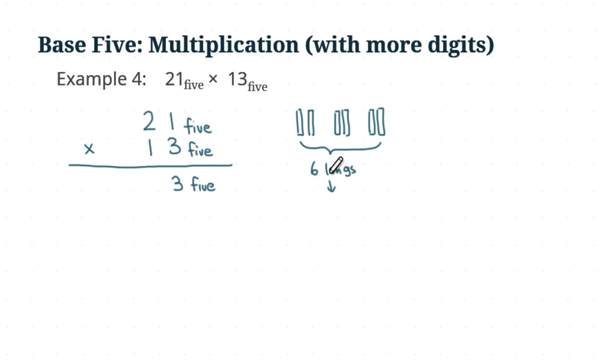So we take five of those longs and convert them into one flat. So we have one flat here and then we have one long left that we didn't use. And so the result, or the minimal set for six longs, would be one flat and one long.